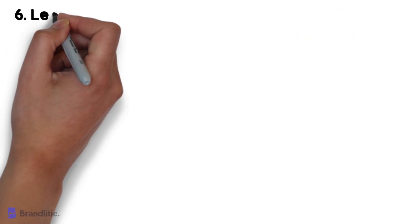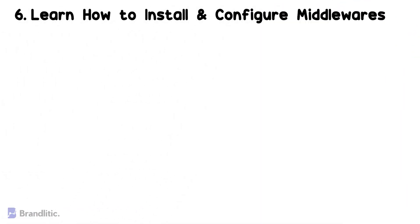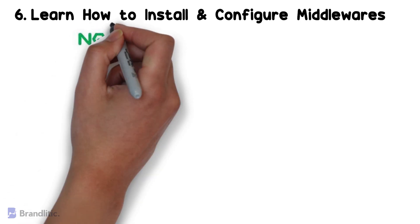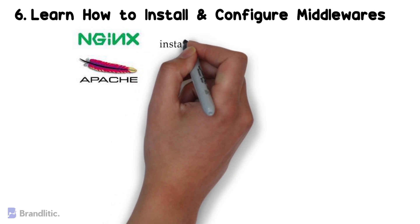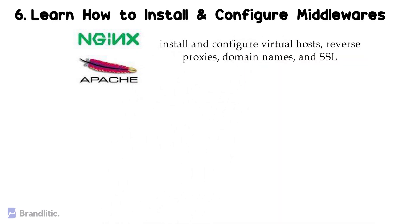Step 6: Learn how to install and configure middlewares. In the DevOps world, Apache and Nginx are the most often used middlewares, and knowing how to install and configure virtual hosts, reverse proxies, domain names, and SSL can greatly aid you in your everyday responsibilities. You can start easy by deploying Nginx as a web server for a simple microservice-based application in order to get familiar with the setup.